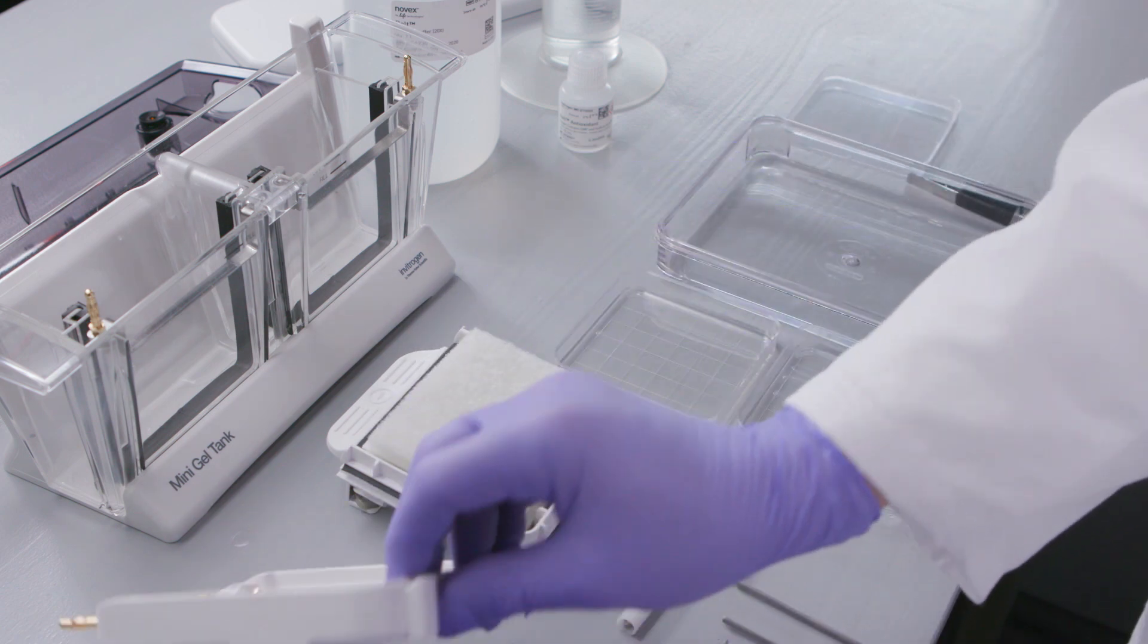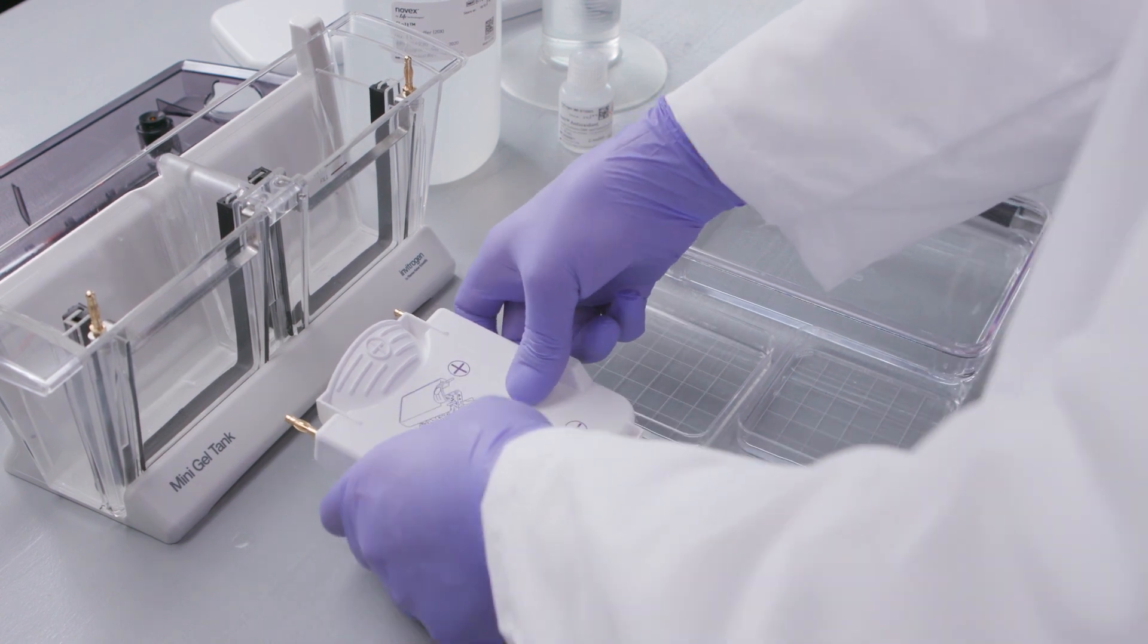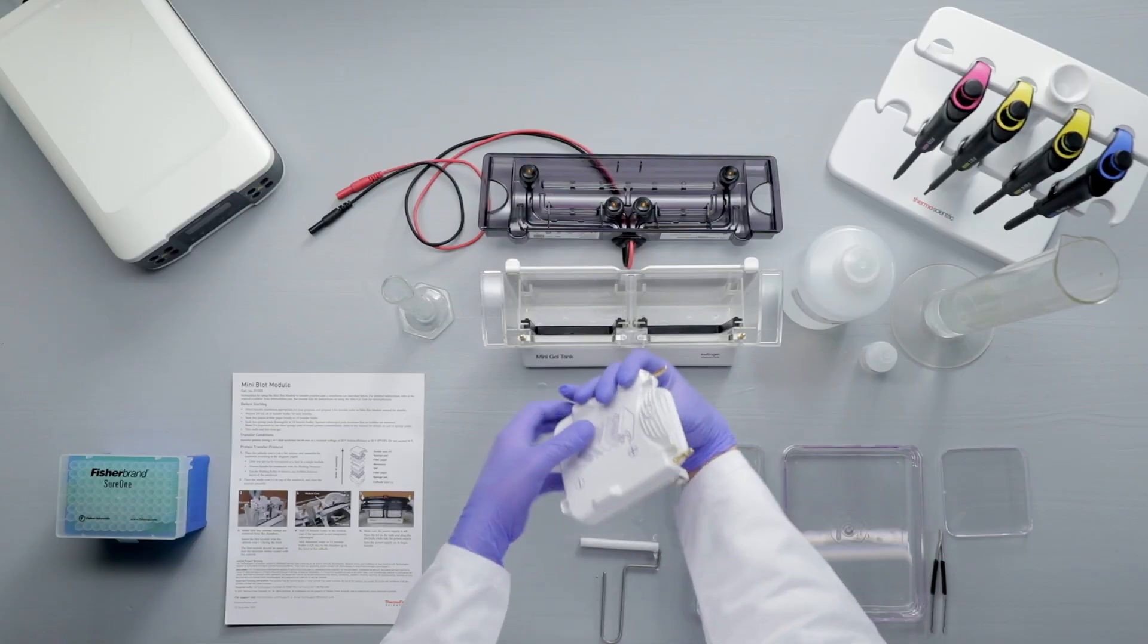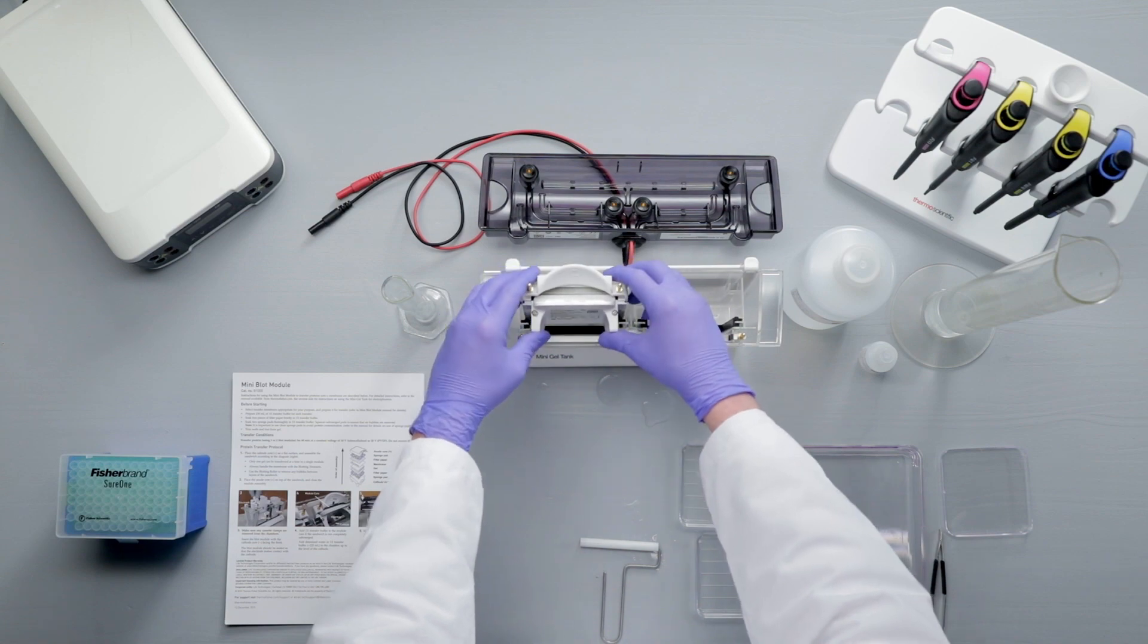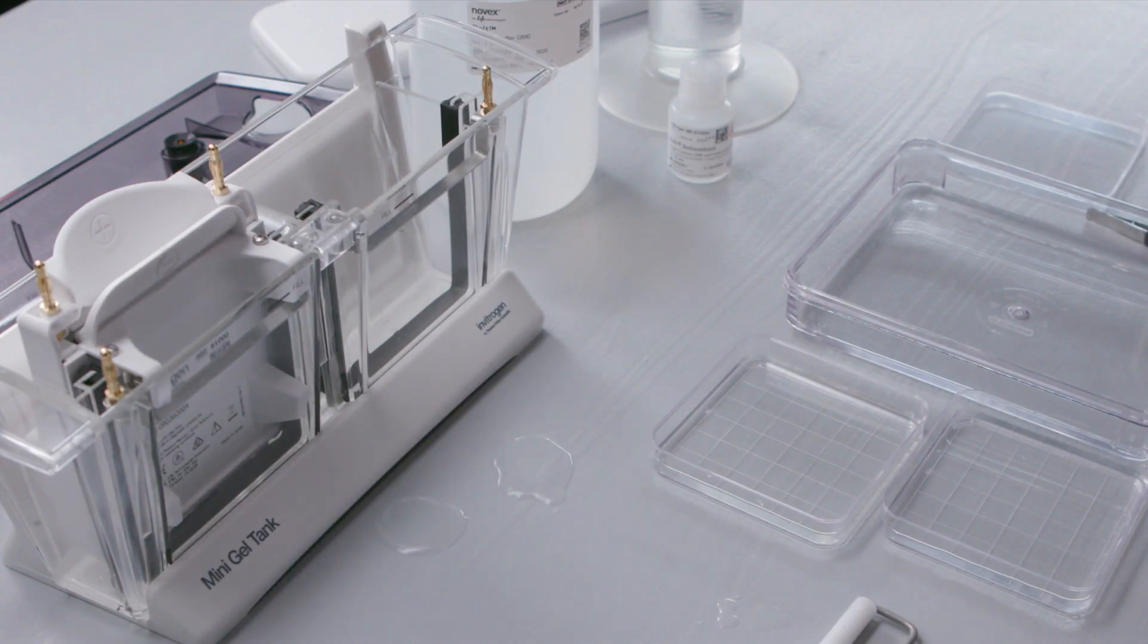Complete the assembly by placing the anode core on top of the sandwich and pressing the two module halves together. Insert the blot module into the mini gel tank with the cathode core facing front. The blot module should be seated with the electrodes contacting the electrode bar.